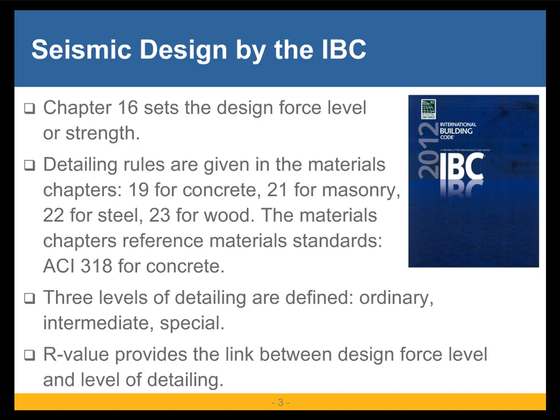The strength comes from chapter 16. The detailing that goes hand in hand with that strength — the rules for that detailing — are given in the materials chapters: chapter 19 for concrete, chapter 20 for aluminum, chapter 21 for masonry, chapter 22 for steel, and chapter 23 for wood. All those materials chapters give us detailing rules by referencing material standards. Chapter 19 on concrete references ACI 318 — that's where the detailing rules really are.